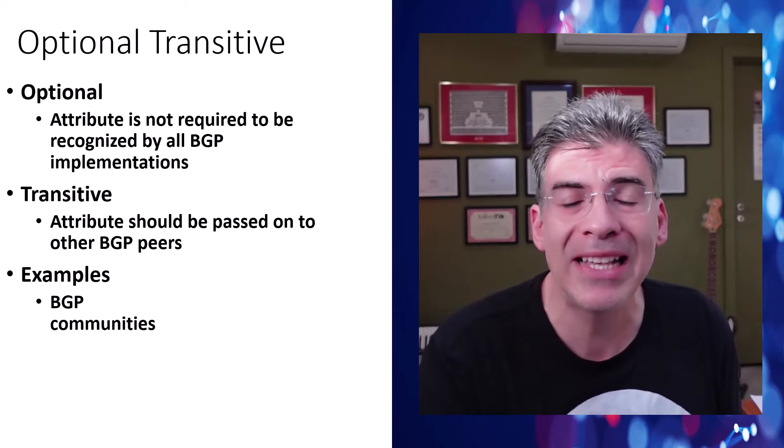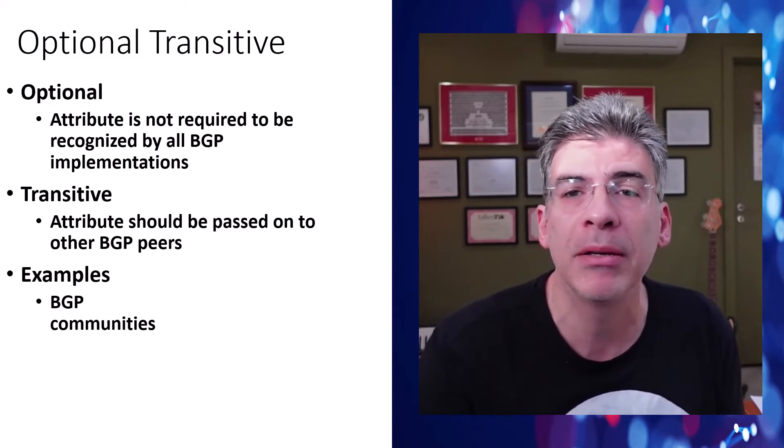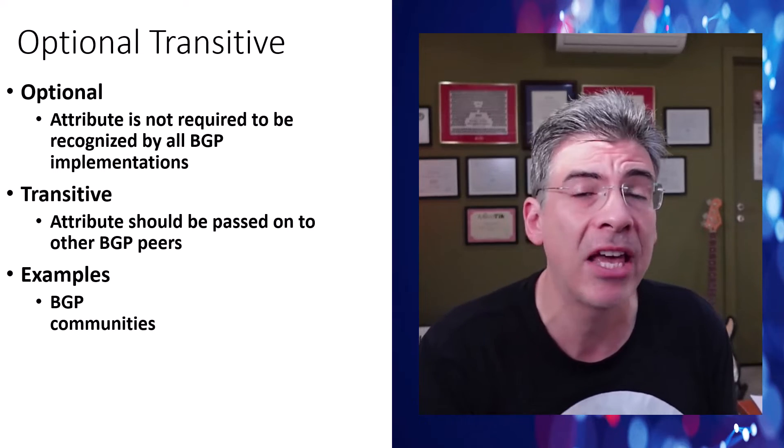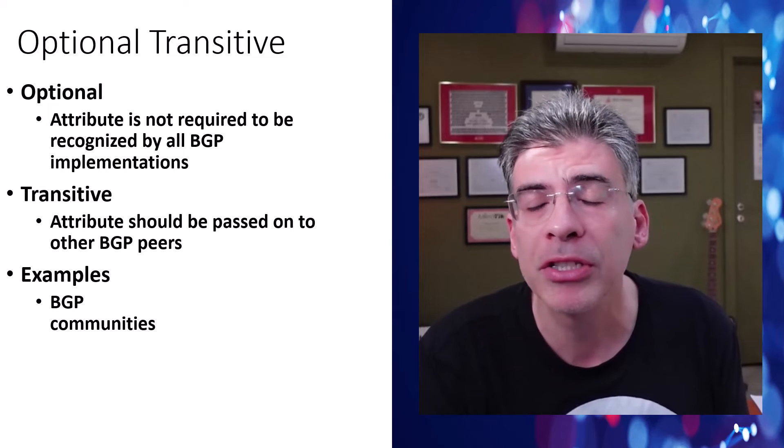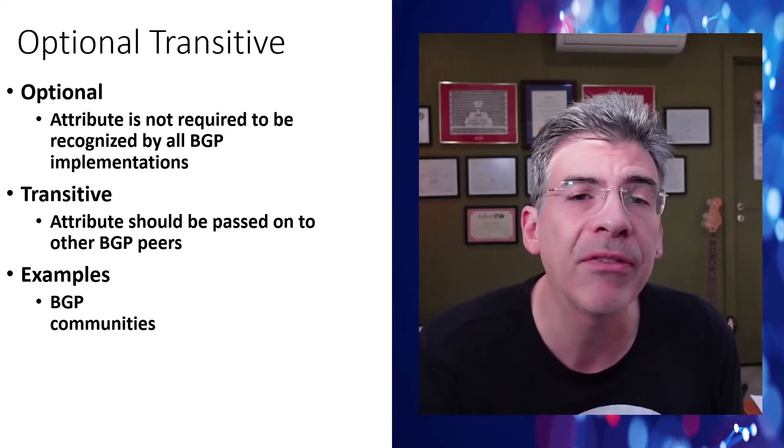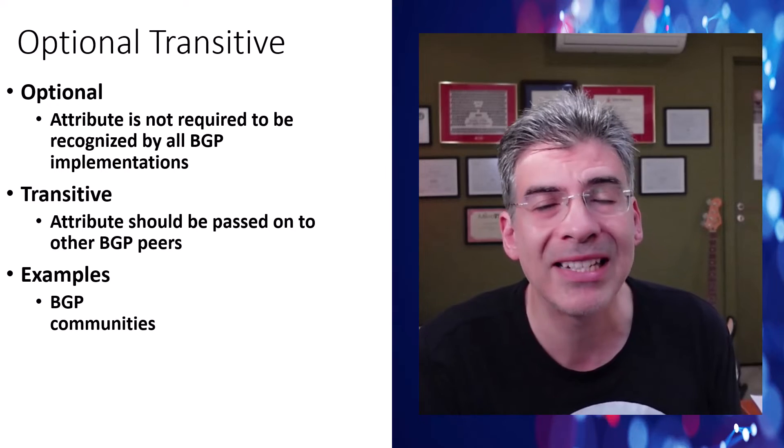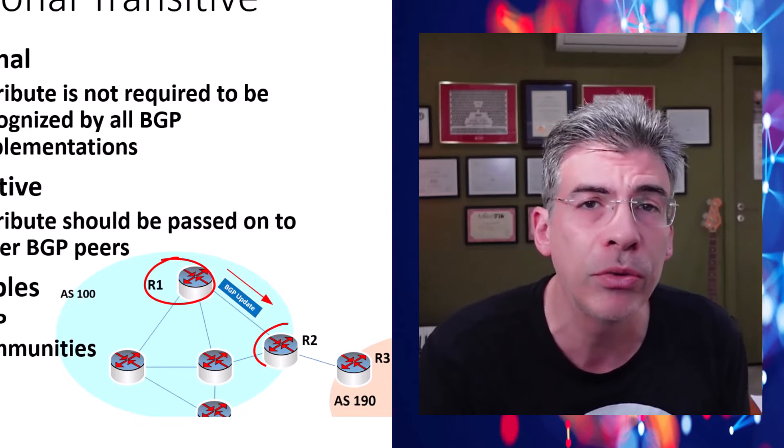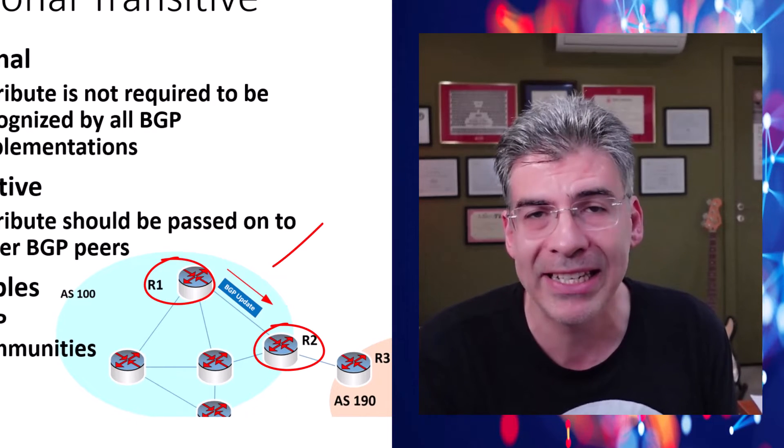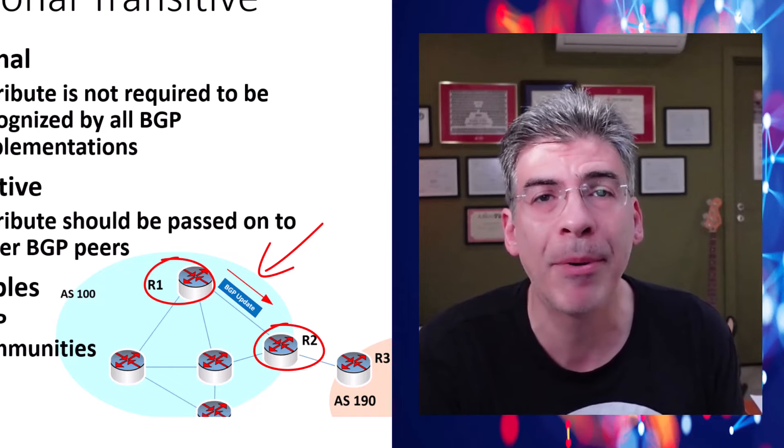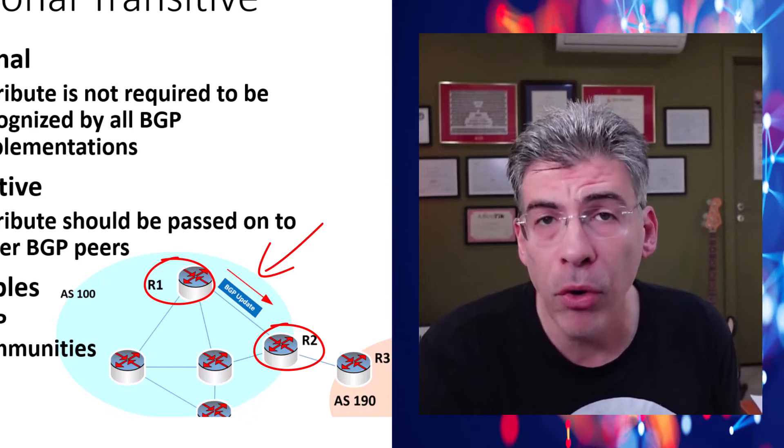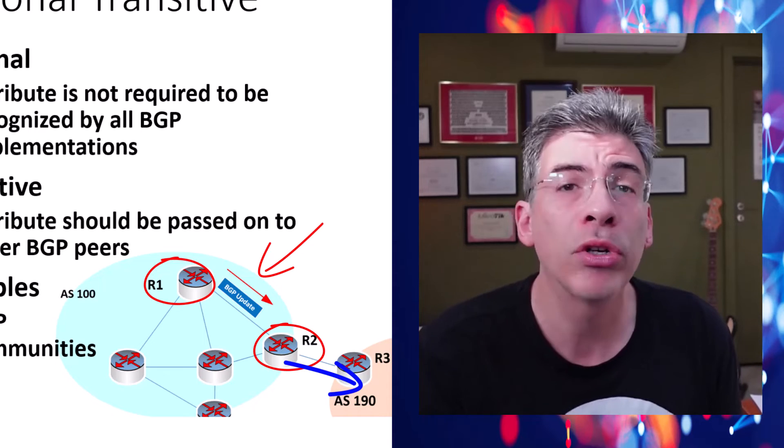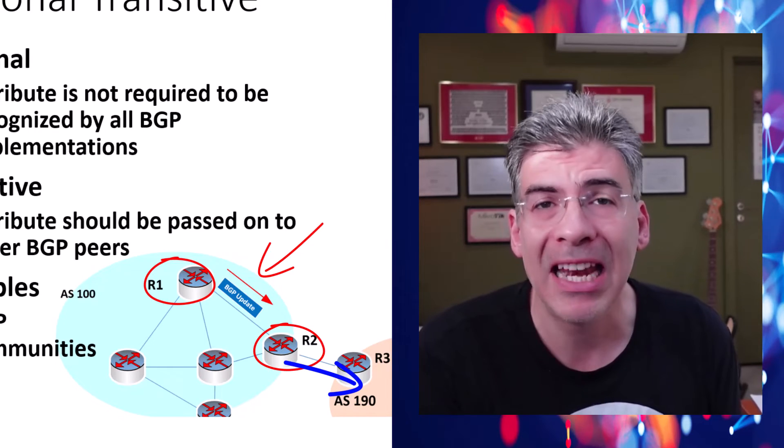Now, an example of an optional transitive attribute is a BGP community. A community may or may not be included in the BGP updates. And if they are, they must be passed on to other BGP routers, even if the router itself is not configured to process that particular community. So, in our example here, if R1 sends an update to R2 with a particular community set, if R2 is not configured to participate in that particular community, it can ignore that attribute. But it is obligated to forward that on to R3 or to any other BGP peers that it may be connected to.